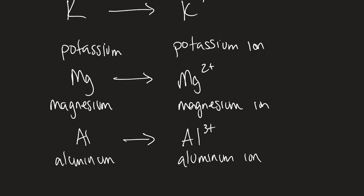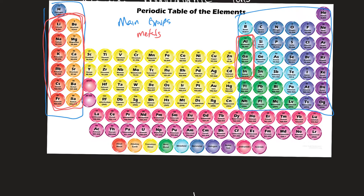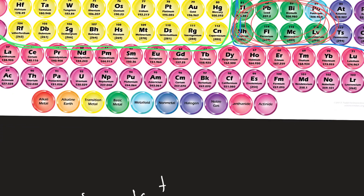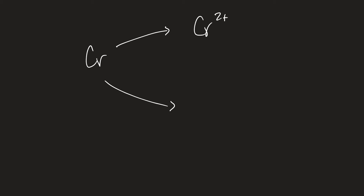Now we're going to talk about our non-main-group metals — the transition metals and the heavy metals. These metals can actually form more than one type of cation. The main group metals only ever form one type: potassium is always plus one, magnesium always plus two, aluminum always plus three. But something like chromium could be either chromium 2+ or chromium 3+, so how do we tell the difference?